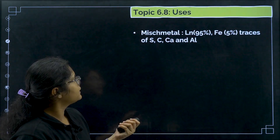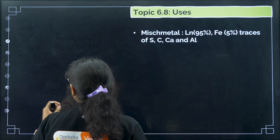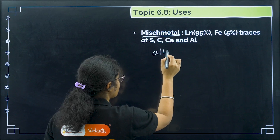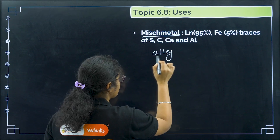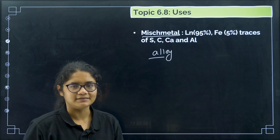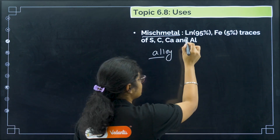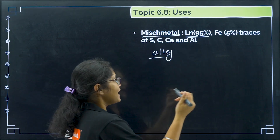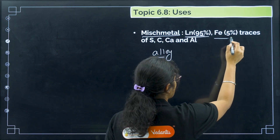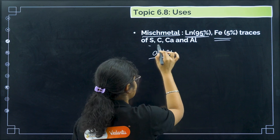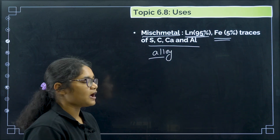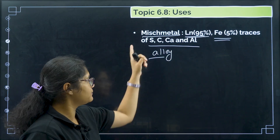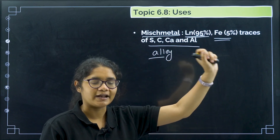Regarding uses, the most important is Misch metal, which is an alloy generally used for making ignition devices and pipelines. In this alloy, the lanthanide percentage is 95%, iron is 5%, and there are some traces of sulfur, carbon, calcium, and aluminum. You must remember that Misch metal is made up of lanthanides and iron.